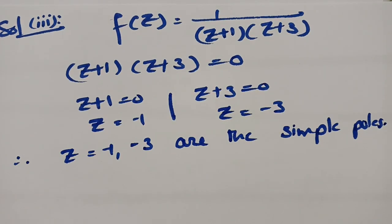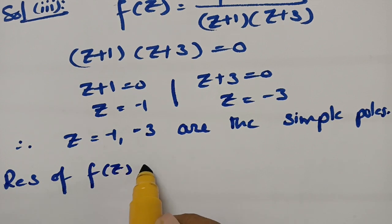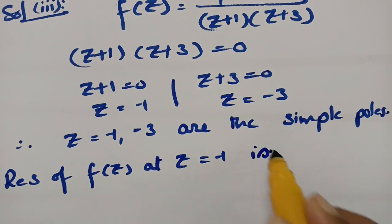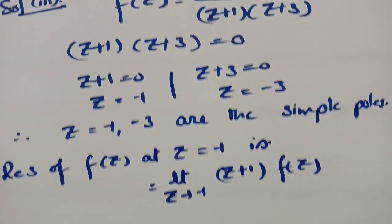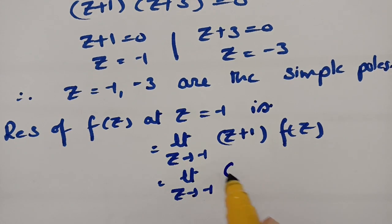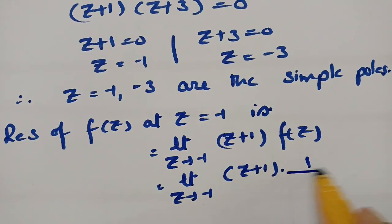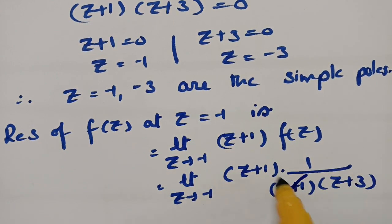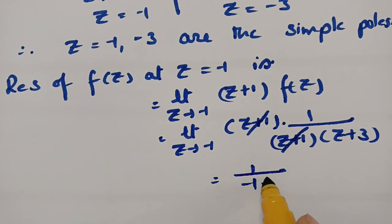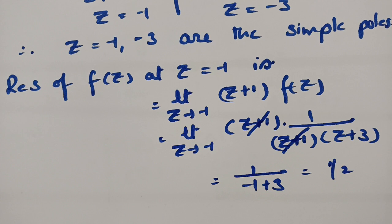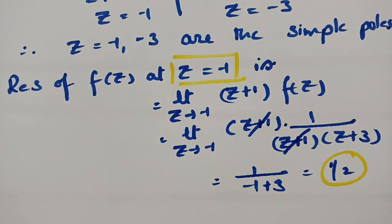Now we have to find the residues of this function. The residue of f(z) at z = -1 is: limit as z tends to -1 of (z+1) × f(z) = limit of (z+1) × 1/[(z+1)(z+3)]. Cancelling (z+1) and substituting z = -1 gives (-1+3) = 1/2. So the residue at z = -1 is 1/2.